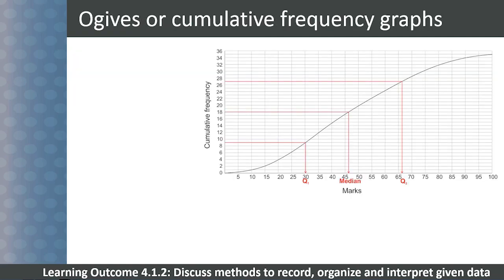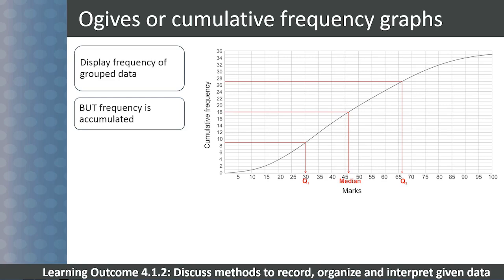Ogives, or cumulative frequency graphs, display the frequency of grouped data like histograms do, but the frequencies are accumulated. In this way, the graph also shows the distribution of the data.